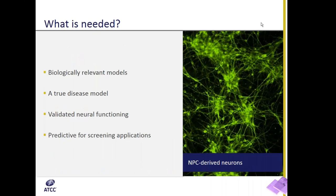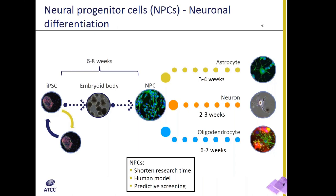What is needed for in vitro neurological studies are biologically relevant models of normal and disease tissue that have been validated for neural functioning and are predictive for screening applications in drug development, normal physiology research, and toxicological studies. Neural progenitor cells answer all these needs, as I'll show you in the following slides.